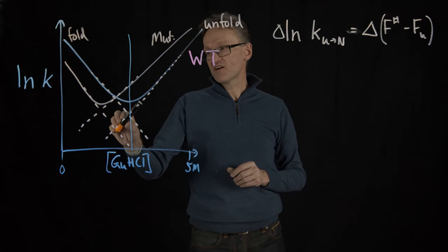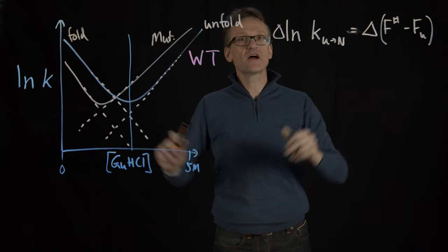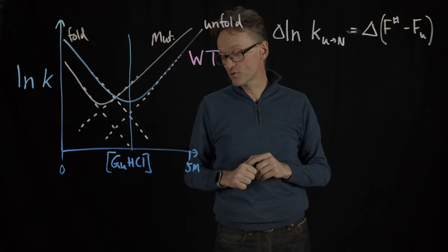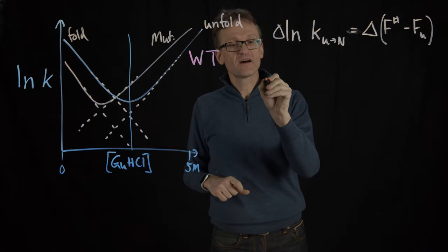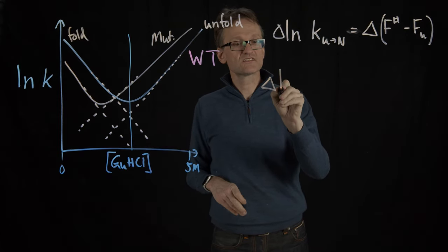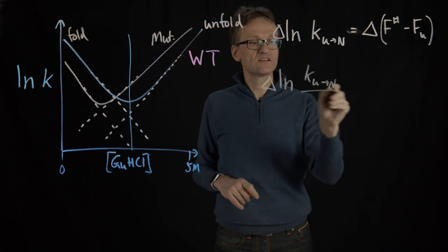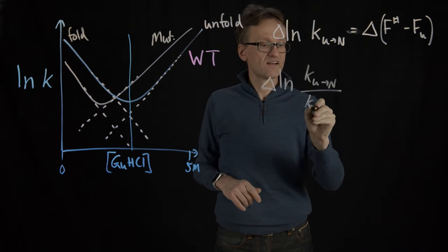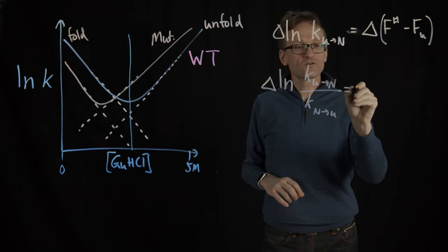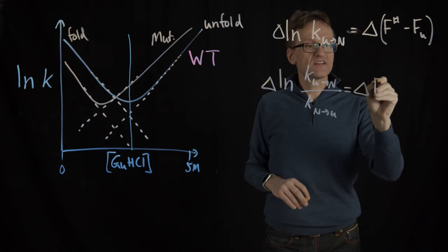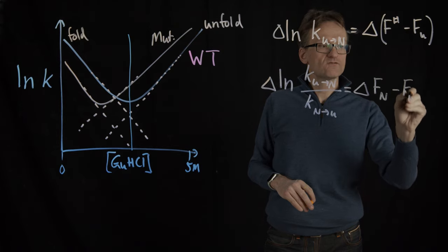Similarly I can compare all these four curves just knowing the free energy barrier from the folded to the transition state. If I combine them I can also look at what is the difference in K unfolded to native divided by native to unfolded, and that's going to correspond to the difference in the native free energy minus the unfolded free energy.